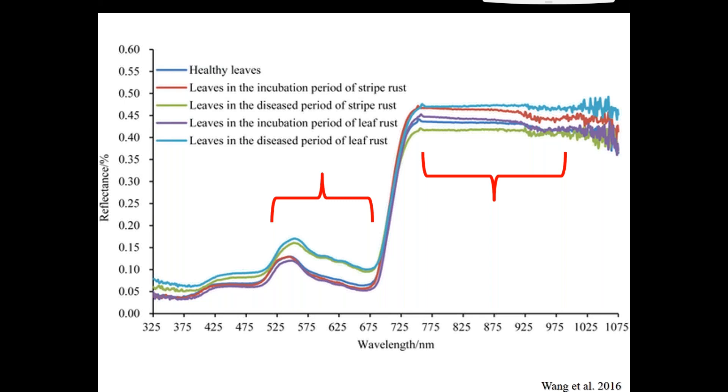But then as we move into what they're calling the diseased period, the reflectance increases quite a lot in the red, green and blue, and it starts dropping in the near-infrared. So again, the same sort of response.